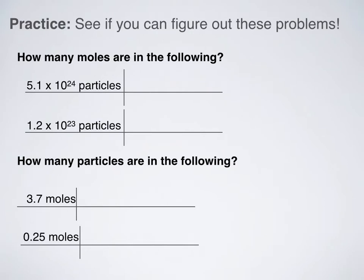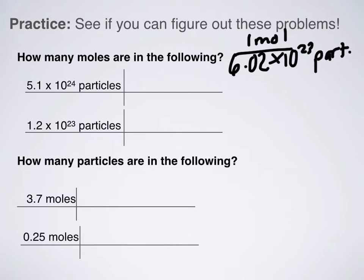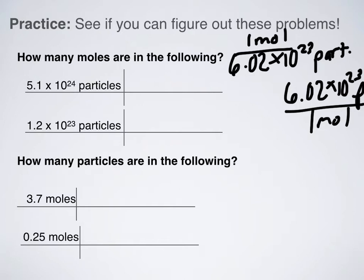So we're going to use Avogadro's number to figure out these problems. So it says, see if you can figure out these problems. How many moles are there in the following? I have 5.1 times 10 to the 24th particles. And I have my nice little box and everything already set up for me. So what is Avogadro's number? Remember, it is 6.02 times 10 to the 23rd particles, and that is how many are in one mole. So my conversion factor can be one of the following: one mole over 6.02 times 10 to the 23rd particles, I'm just going to put part. Or it can be 6.02 times 10 to the 23rd particles over one mole. Remember, conversion factors can be flipped around. So I can write it this way, or I can write it this way.